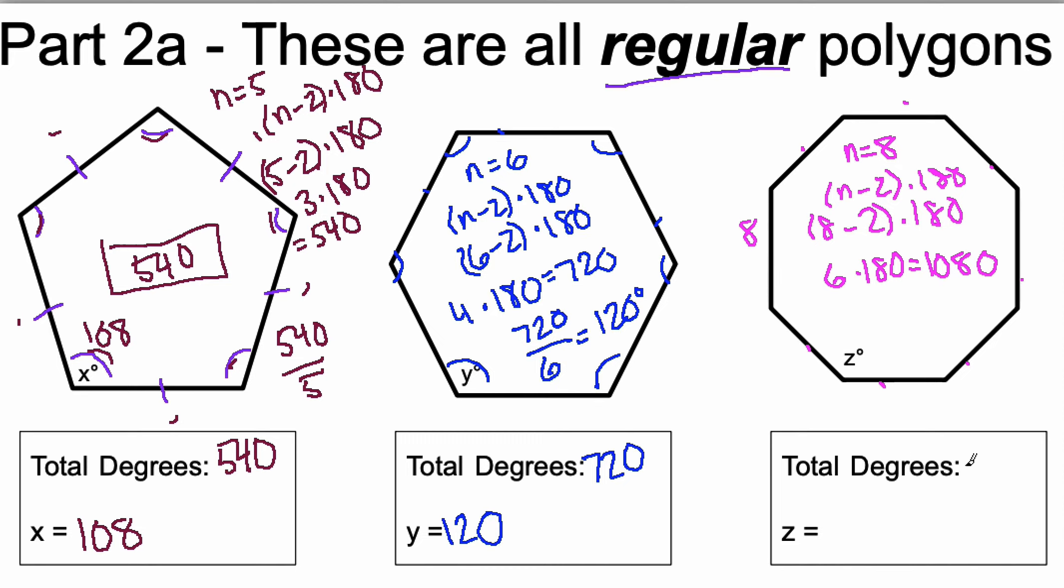And now, so I know that there's 1080 degrees inside this regular octagon. But now I need to divide it up into 8 equal parts. Because all of these angles are the same measure. So I do 1080 divided by 8 and I get a measure of 135 degrees.